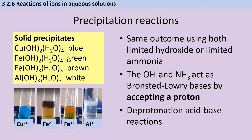The specification requires you to describe and explain simple test tube reactions of M2+ and M3+ ions with the bases hydroxide, ammonia, and carbonate. With hydroxide: adding sodium hydroxide to copper(II) ions gives a blue precipitate; iron(II) gives a dark green precipitate; iron(III) gives an orangey-brown precipitate; and aluminium gives a white precipitate, which will re-dissolve if you continue adding sodium hydroxide.